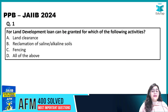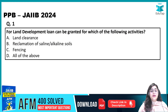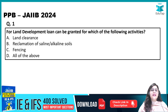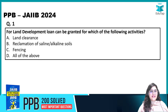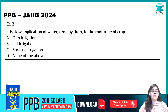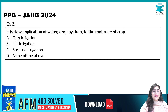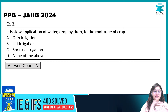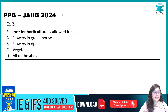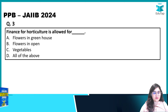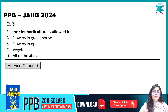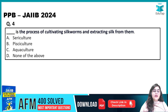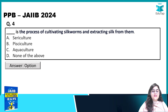Now we will see MCQs. First question: for land development, loans can be granted for which of the following activities — land clearing, soil reclamation, saline or alkaline treatment, or fencing? Since you can take a loan for all these activities, D is the correct answer. Next: slow application of water drop by drop to the root zone of the crop — this is drip irrigation, which is the correct answer. Next: finance for horticulture is allowed for flowers in greenhouse, flowers in open, or vegetables — the answer is D, all of the above. The last question — what is the process of cultivating silk worms and extracting silk from them: sericulture, pisciculture, aquaculture, or none of the above — is left for you to answer in the comments section.